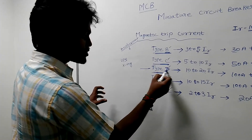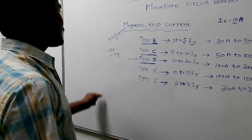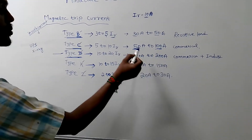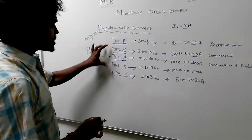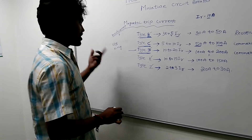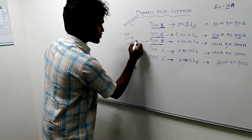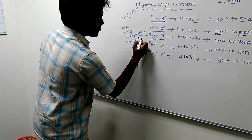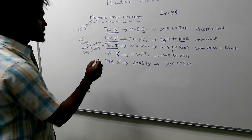Type D is used for high inrush current applications. It is used in UPS systems, x-ray machines, and industrial welding. It is also used for large winding motors and large motor protection as well as transformer protection.